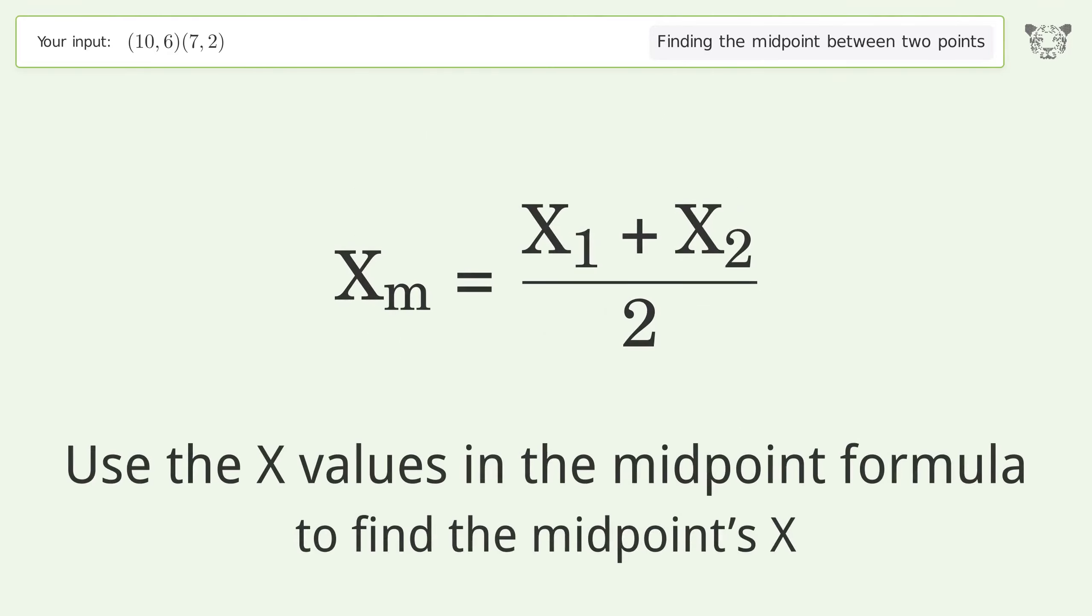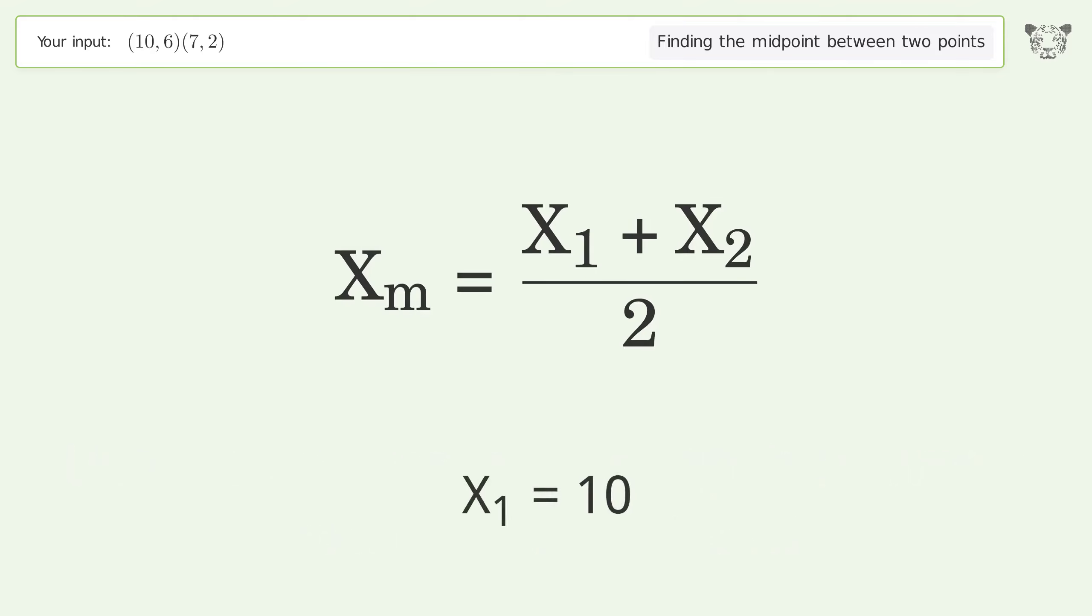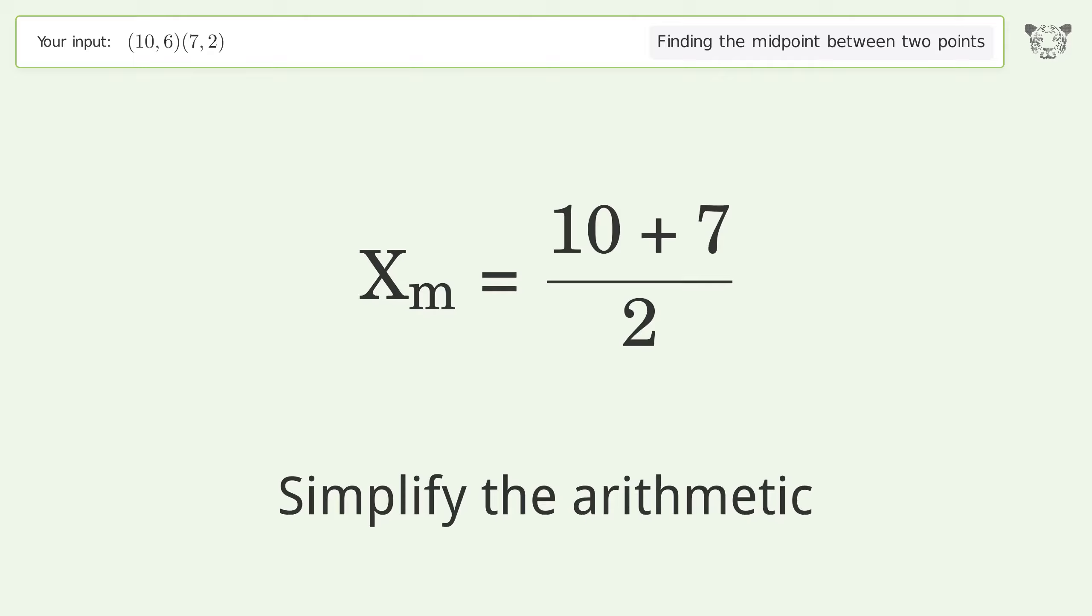Use the x values in the midpoint formula to find the midpoint's x. x1 equals 10, x2 equals 7. Simplify the arithmetic.